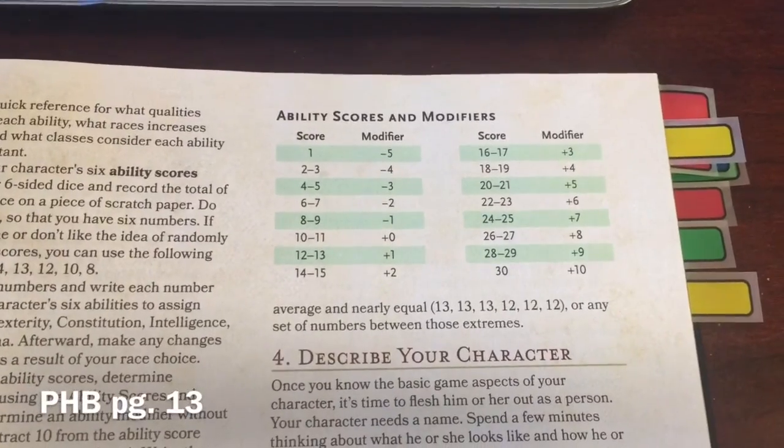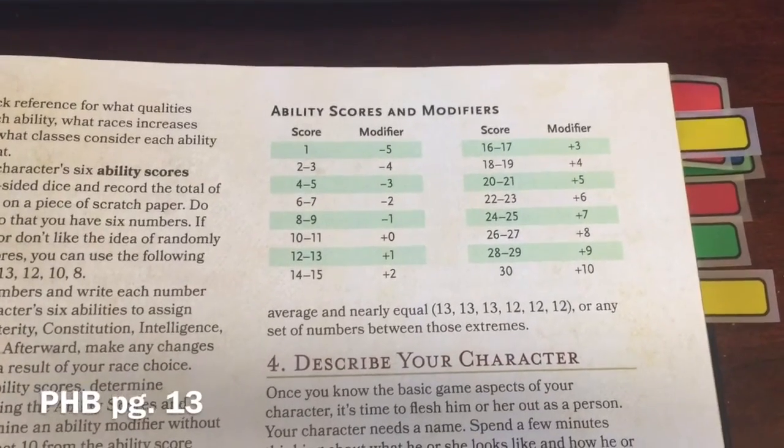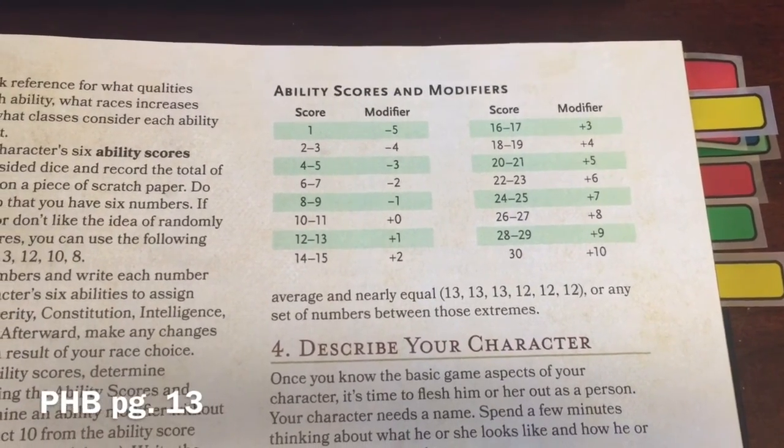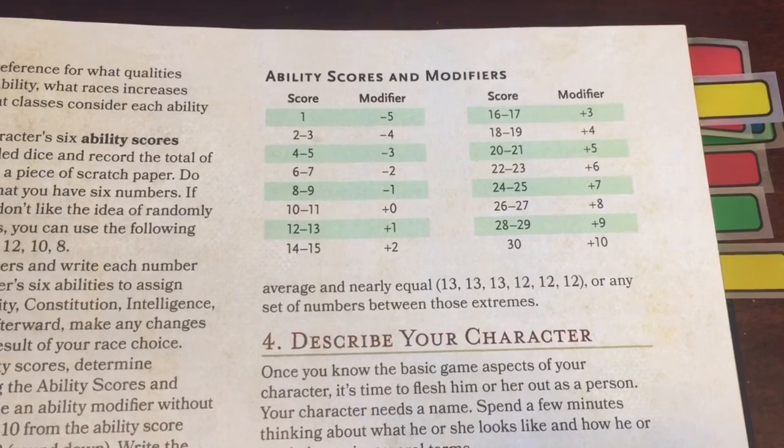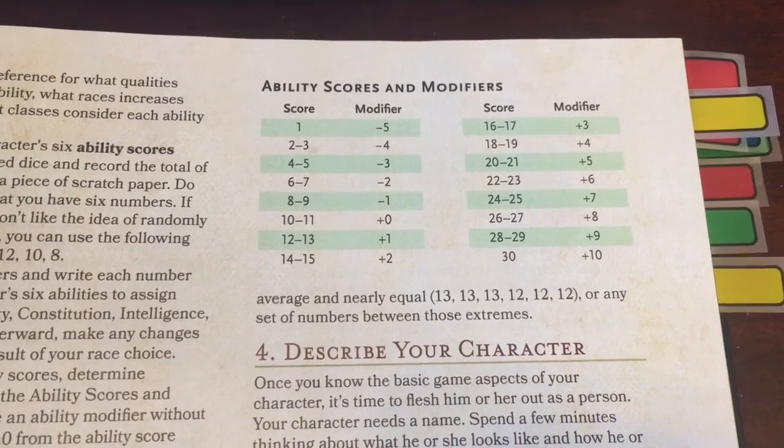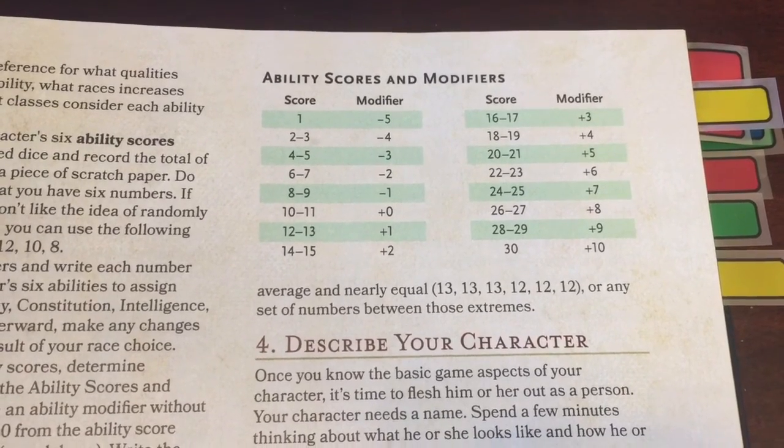So the first thing we're going to talk about is where do these numbers come from here? These are your ability scores and the six abilities of strength, dexterity, constitution, intelligence, wisdom, and charisma. This is the first set of numbers that sort of make you go, what is this all about? How do you get them? What do they mean? First thing I want to show you is this very important table here called ability scores and modifiers. The numbers on the left column under the header score are a range of numbers between 1 and 30, and then the modifiers on the right from anywhere from negative 5 up to plus 10.